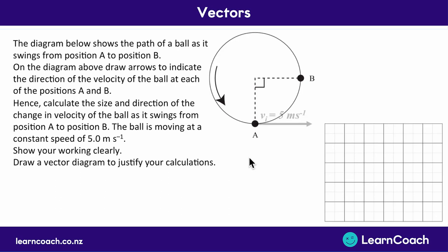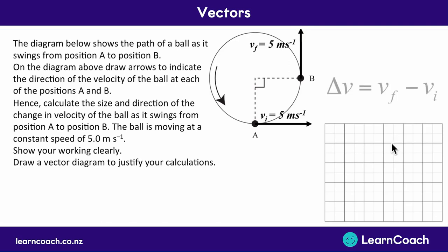First, let's draw on the diagram what we've got. The ball is moving at a constant speed of 5 meters per second, so at any point it's going 5 m/s straight ahead — 5 m/s at point A and 5 m/s at point B. The velocity has changed because velocity has a direction, but the speed remains the same. Speed doesn't have any direction — it's just 5 m/s. So these vectors are 5 meters per second long. To find the change, we use: Δv = vf − vi, where the final velocity is at point B and the initial velocity is at point A.